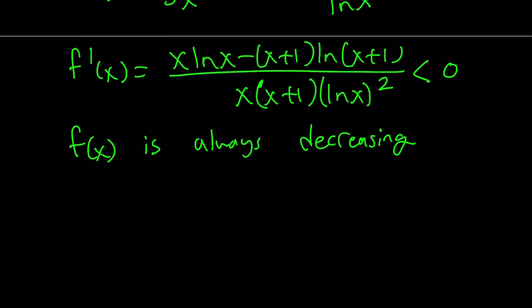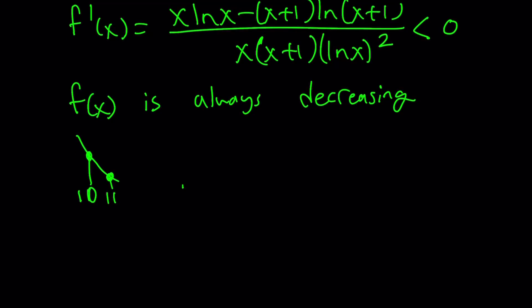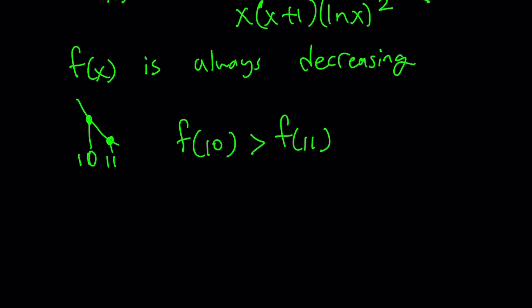Since f(x) is always decreasing, evaluating it at 10 and at 11 tells us that the value at 11 is definitely smaller than the value at 10. So since we're looking for the larger one, we can safely say that f(10) is greater than f(11). Going back to the definition of f, this implies that log₁₀(11) is always going to be greater than log₁₁(12). So the larger number is the first one.